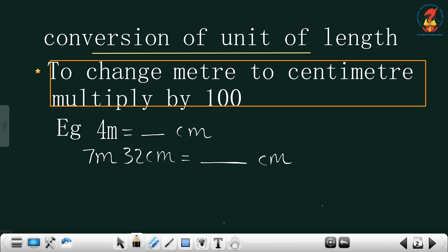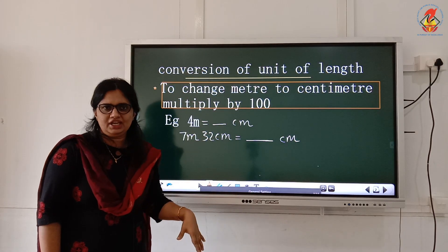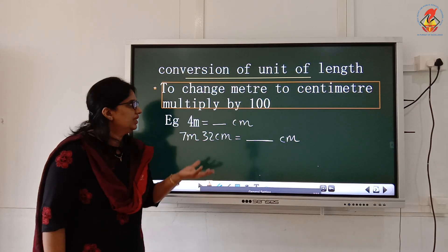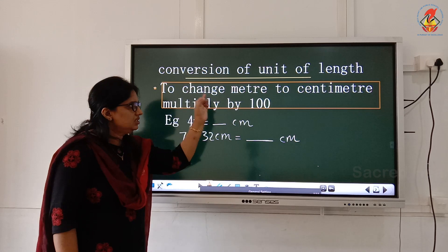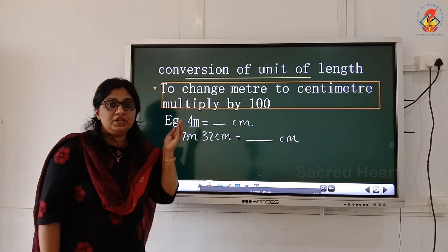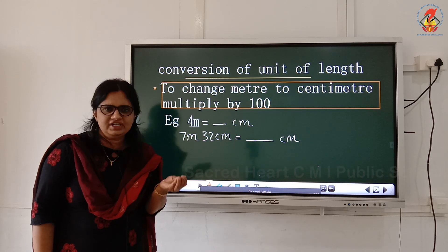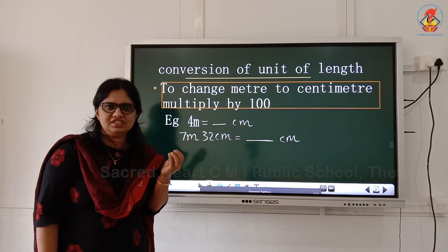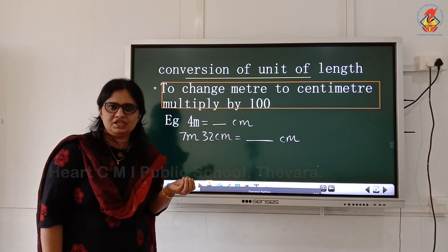Here I need to convert one unit of length to another unit only. How can I convert like this, children? You tell me. To change meter to centimeter, you need to multiply by what? 100 only. You know what is the reason? The relation between meter and centimeter is what? 1 meter equals 100 centimeter.